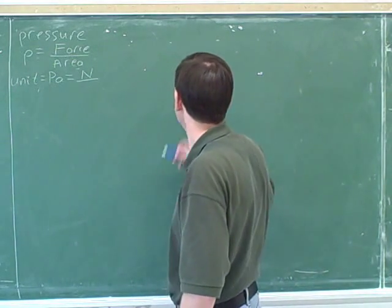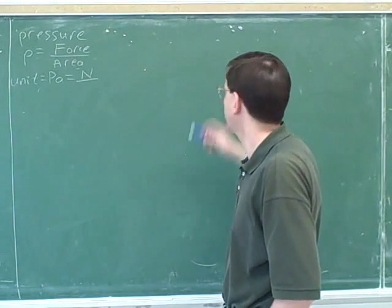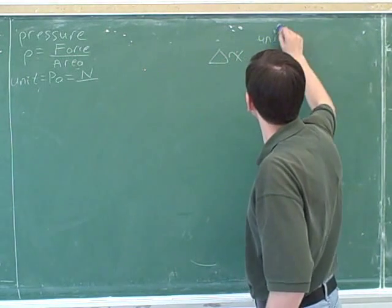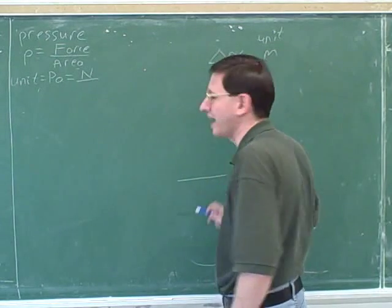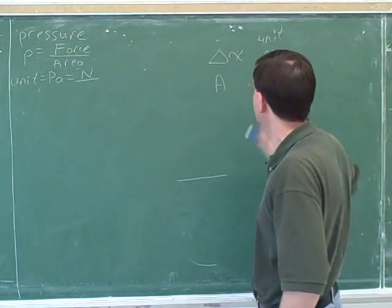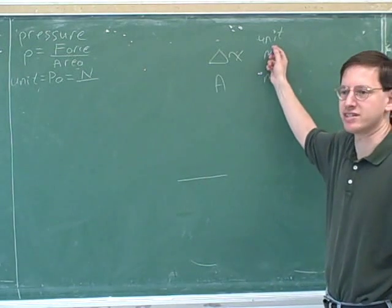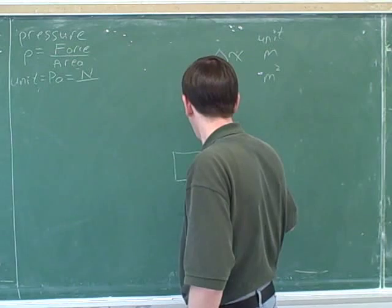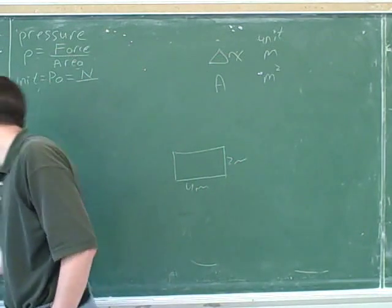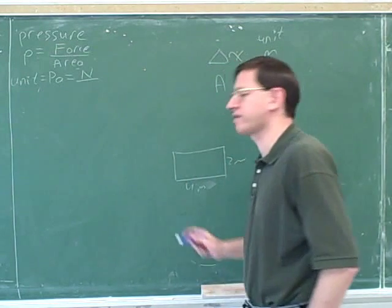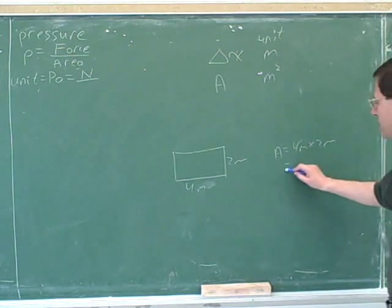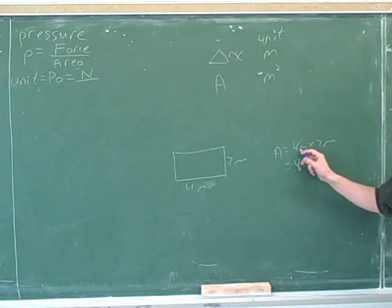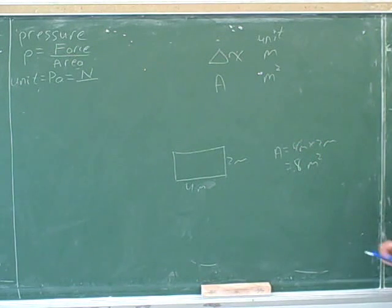Let's start with the idea of distance or displacement. What are the units for distance? Meters. And then what are the units for area? Meters squared — because when you calculate an area, you're multiplying two distances. For example, the area of a rectangle would be length times width: 4 meters times 2 meters gives you 8 meters squared, not 8 meters. We multiply meters times meters, so the units for area are square meters.